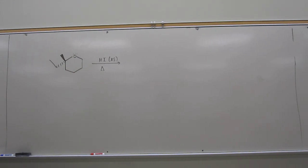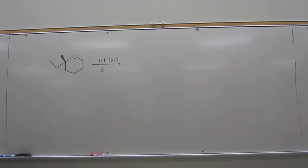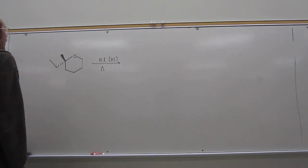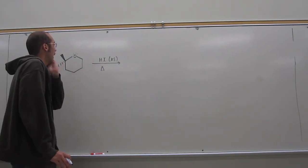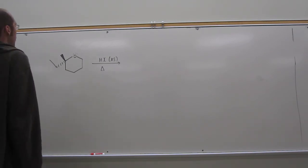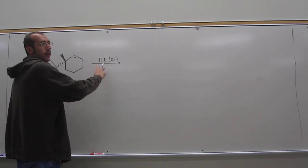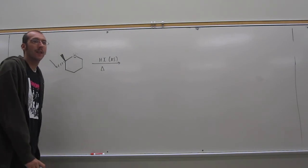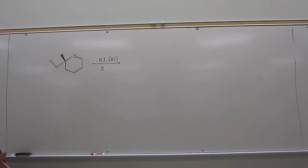So we've got this cyclic ether, and we're reacting with HI, haloalic acid, with excess. You know, so the first thing that's going to happen, these things are very strong acids, right, especially HI.